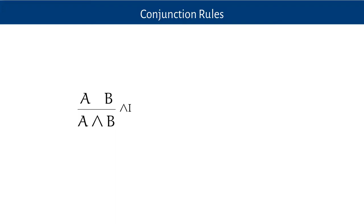Now I'll go through each rule. Starting with conjunction: to prove a conjunction A and B, I must prove both conjuncts — prove A and prove B — then I can write A and B. On the other hand, to exploit or eliminate a conjunction, if I've proved A and B then I can conclude A, or I can conclude B. Those are the conjunction rules — they're really simple.